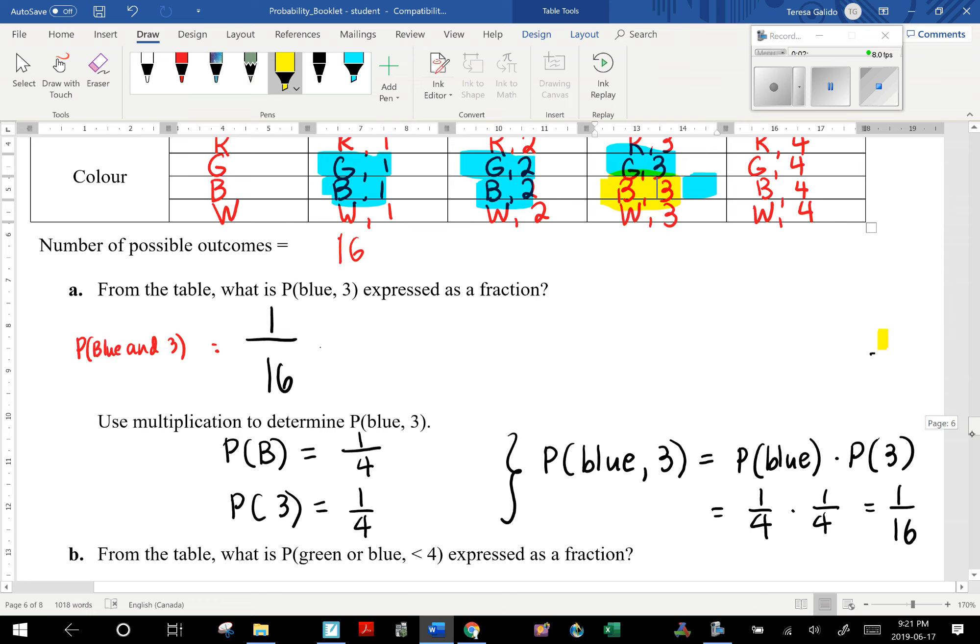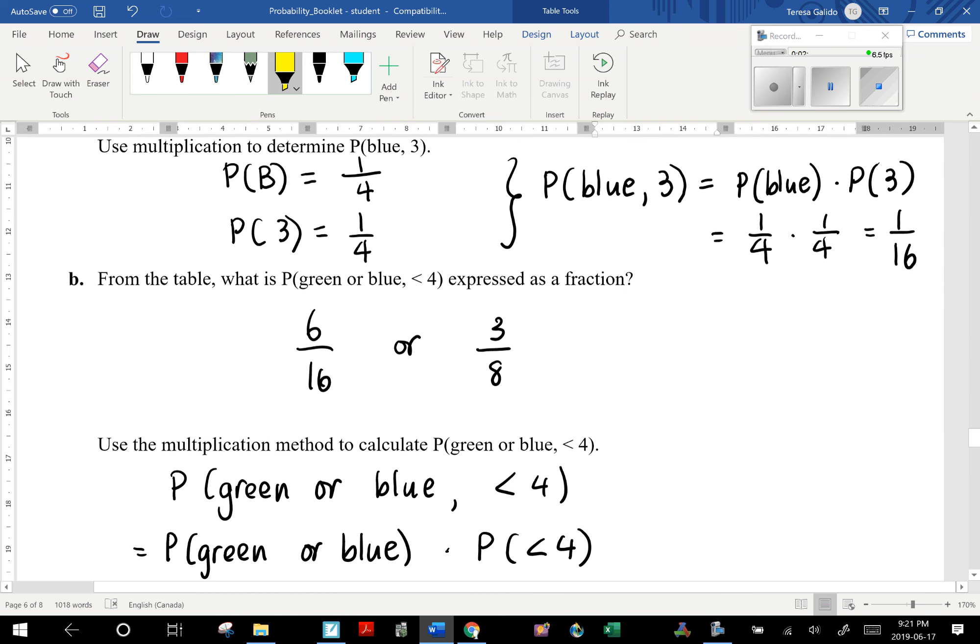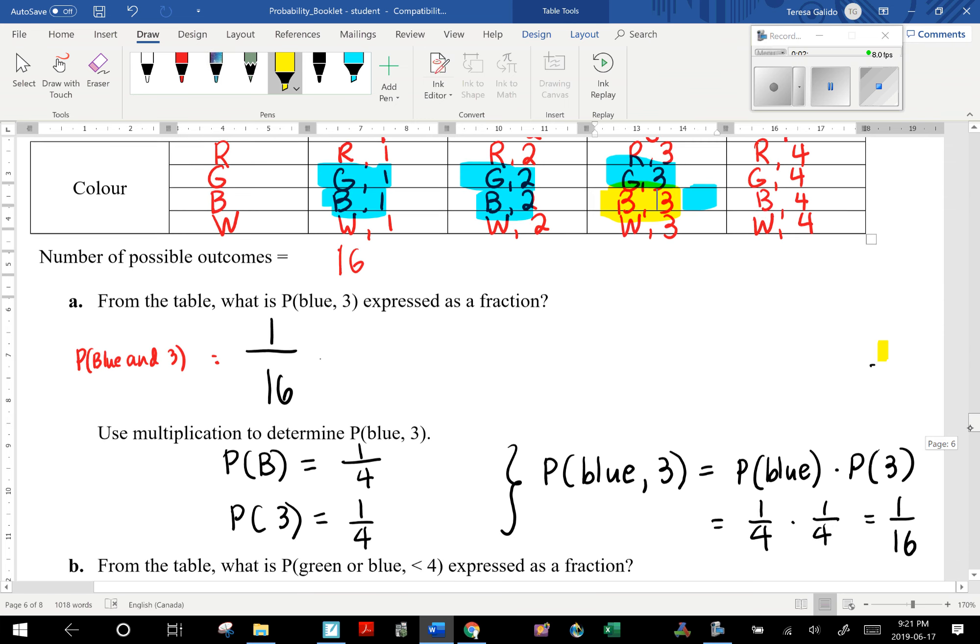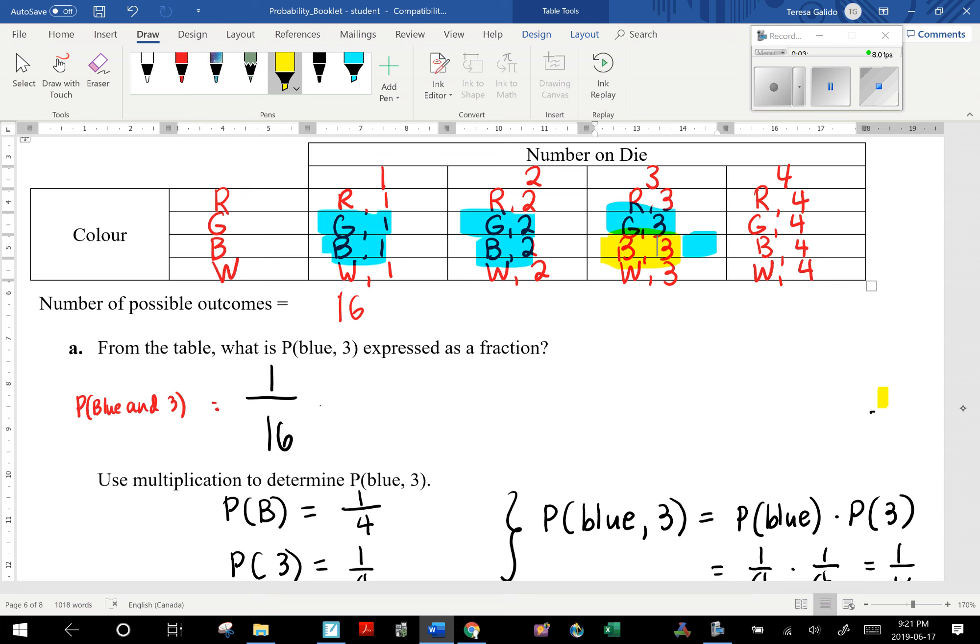Let's look at another example. From the table, what is the probability of getting a green or blue and a number less than 4, expressed as a fraction? If we look at our table here, I highlighted blue-green, either blue or green and a number less than 4. So this qualifies, this qualifies.